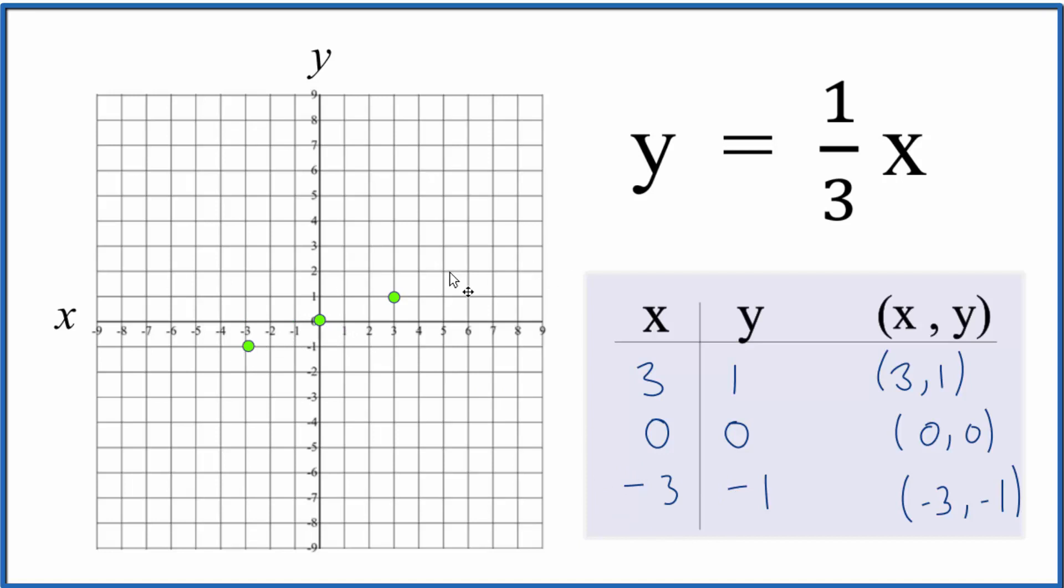Finally, we have negative 3 for x and negative 1 for y. You can see these all line up. We can put a line through them and add arrows to show it goes to infinity. This is our graph for y equals one-third x. Any points we put in for x would give us y values with coordinates that fit right on the graph. You could have chosen just two points; I like to do three in case I make a mistake.